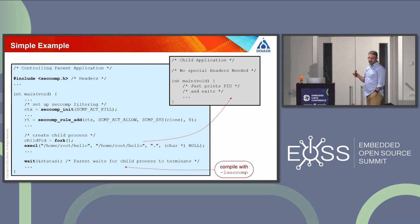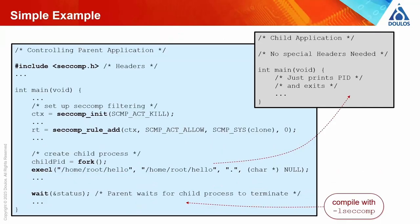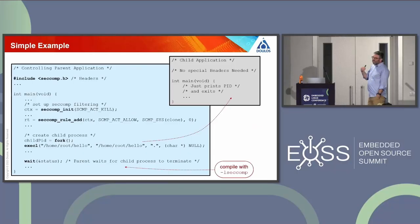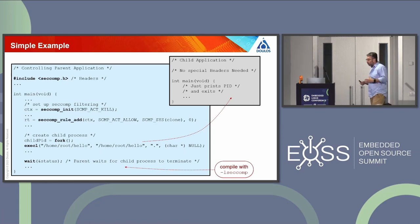To summarize the basic usage: include the header, initialize the filter with a default action, set up your rules, then create the child process. The parent needs to be compiled with the appropriate link option, -lseccomp. The child is blissfully unaware that anything is going on — it doesn't know it's running in this confined environment until something goes wrong. This isn't typically how we'll work in a real system — we'll be working as part of a wider framework of processes and applications.